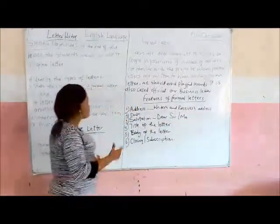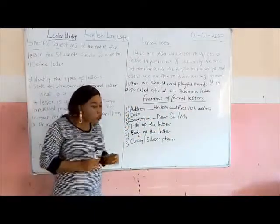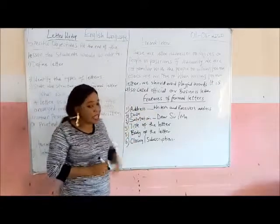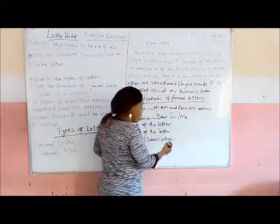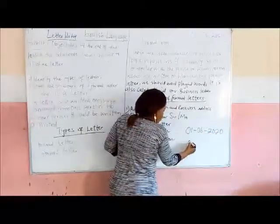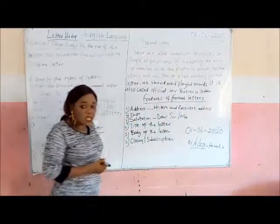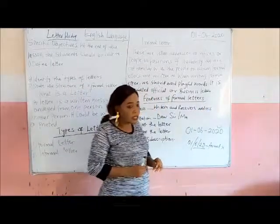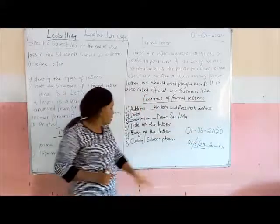The writer's address is always written on the right-hand top side of the paper. Immediately after the writer's address, you have the receiver's address, which comes on the left-hand side. The next feature is the date. In a formal letter everything is precise — for example, today's date is 1st of June 2020. The date comes under the receiver's address, and it covers for both the receiver and the writer.